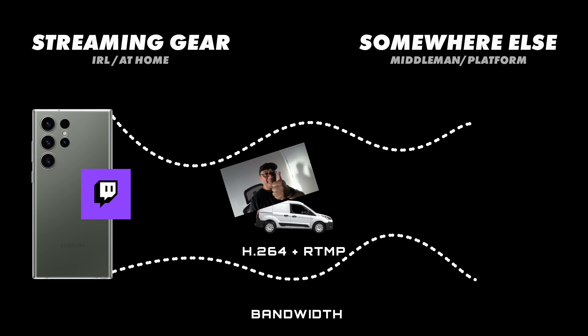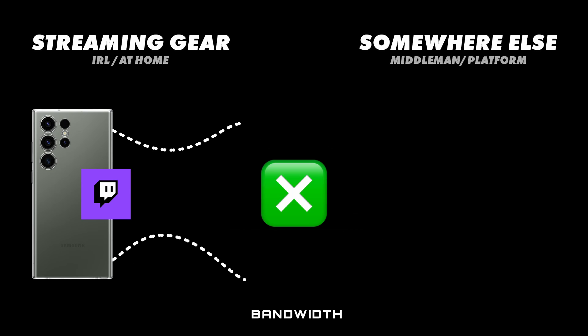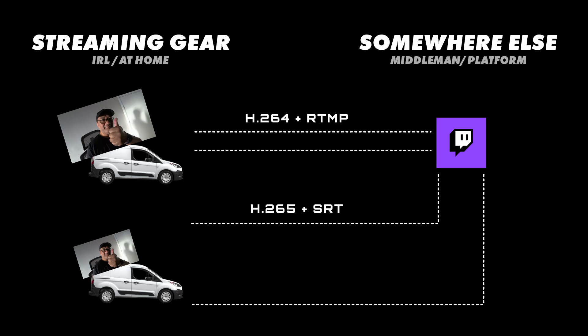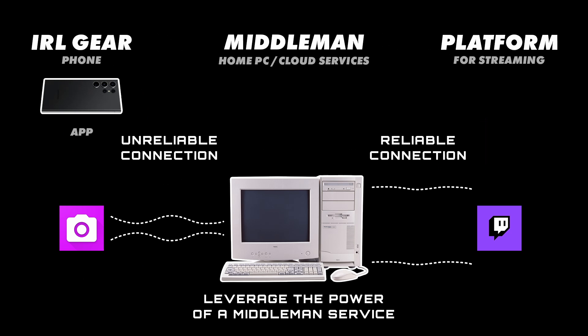Take this same example and apply it to one of the apps on a mobile phone. The difference is the road will be a lot smaller, with the width all over the place. It might be fine one second, then completely dead the next. RTMP and H.264 will take the most direct route and will do fine most of the time. And this is one of the reasons why you want to leverage the power of a middleman service — your mobile phone can broadcast your video using H.265 and SRT to your home computer, in what should be the most efficient way possible.